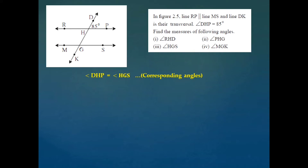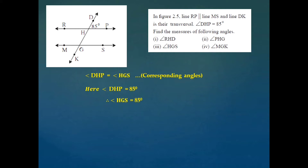Angle DHP is congruent with angle HGS because these two are corresponding angles. Angle DHP is 85 degrees, which is given. That is why angle HGS is also 85 degrees, because if two lines are parallel the corresponding angles are congruent.